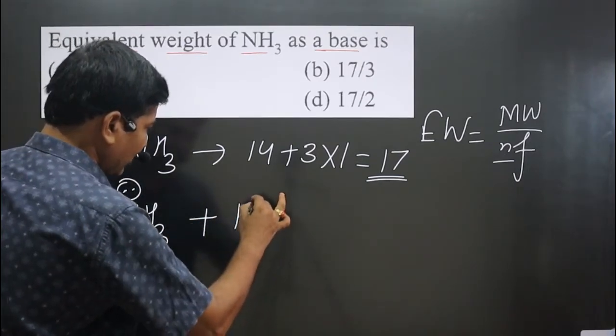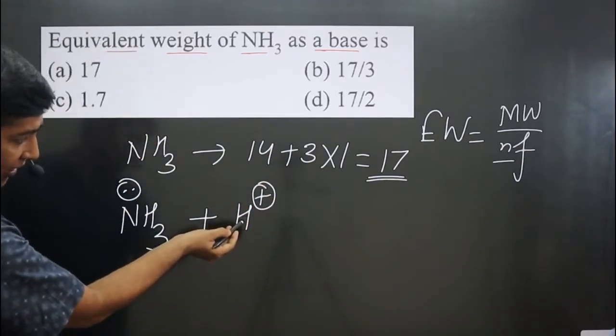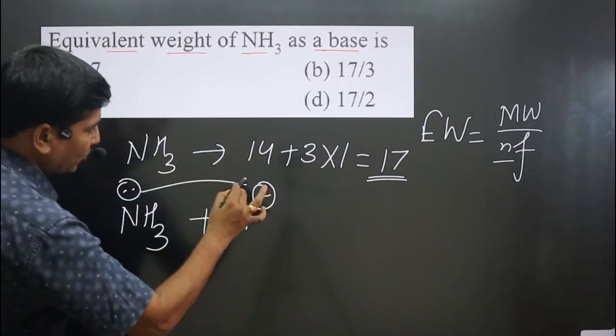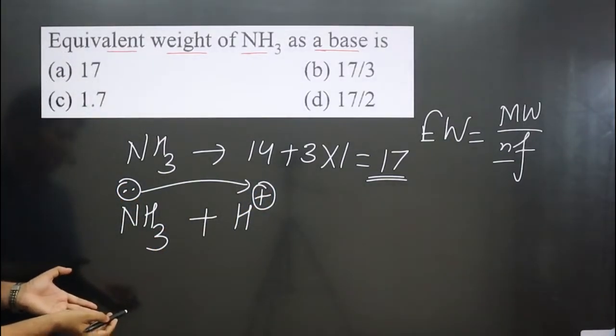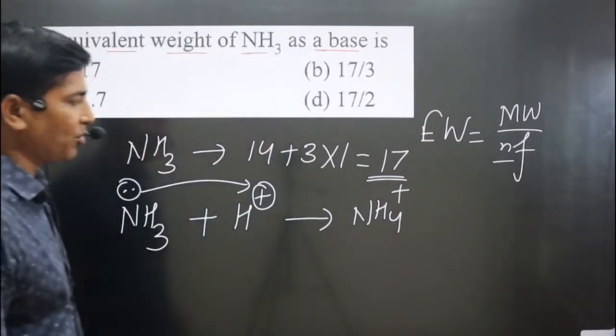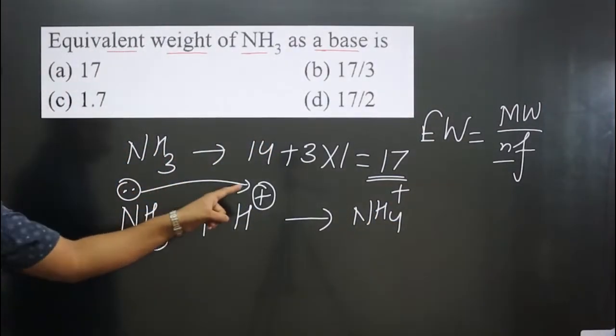Let's say H⁺ ion is there - it is electron deficient. NH₃ is electron rich and can donate electron density, that's why it's acting as a base. It will convert into NH₄⁺ because it is donating electron density.